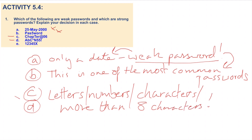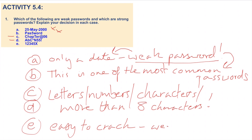For E, we've just got a sequence of numbers — 1, 2, 3, 4, 5 — and a letter at the end of it. Again, this is a very weak password and potentially would be very easy to guess.